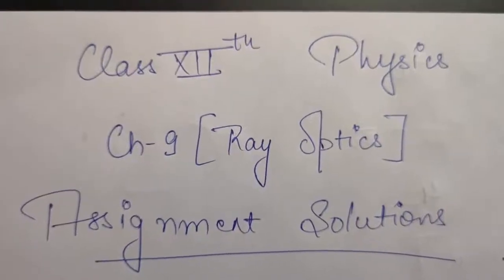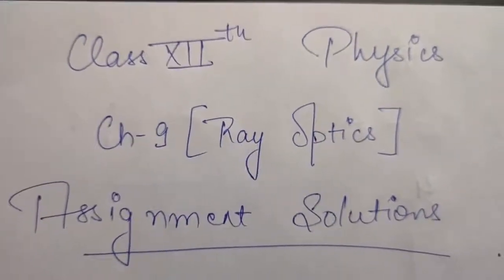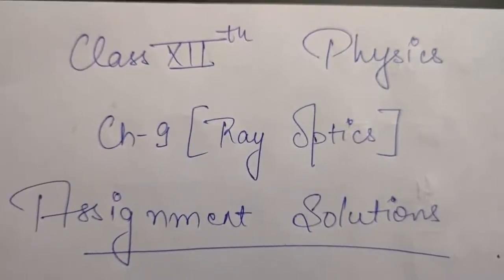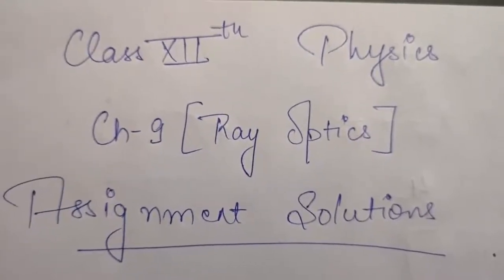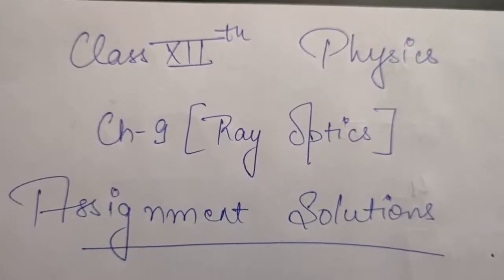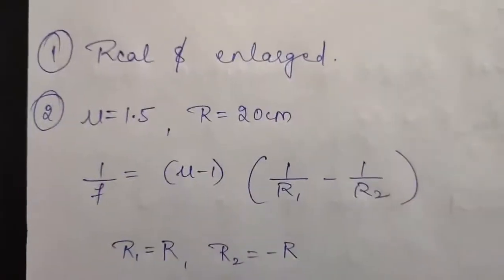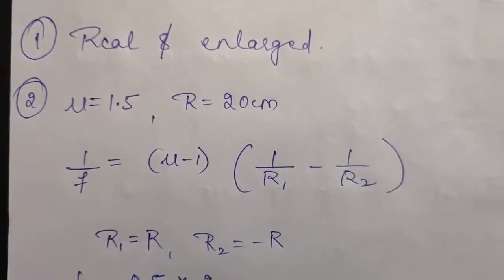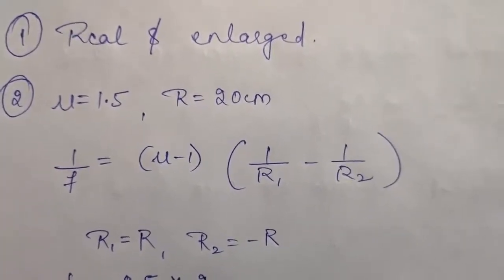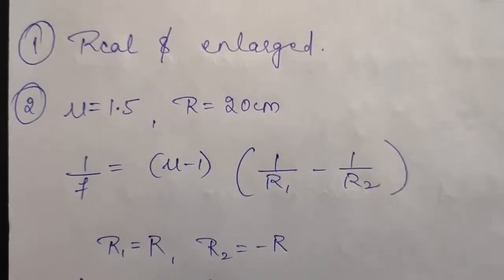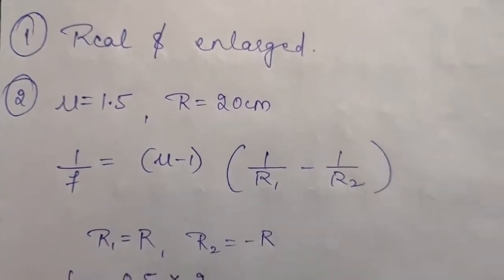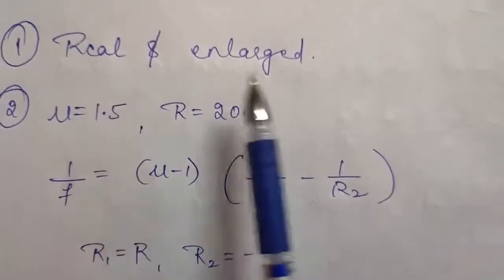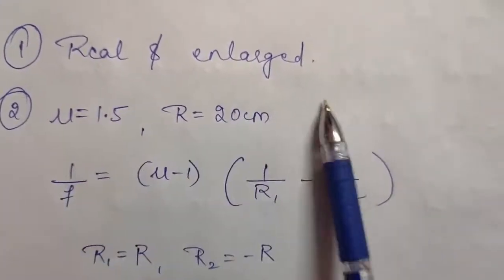Good morning Class 12 students. This is your subject physics, Chapter 9, that is ray optics, and in this lecture I will be discussing assignment solutions which was given to you. The first question of the assignment asks: what are the properties of the images formed by an objective of a compound microscope? As all of you know, the image formed by the objective of a compound microscope is real and enlarged. So these are the properties.